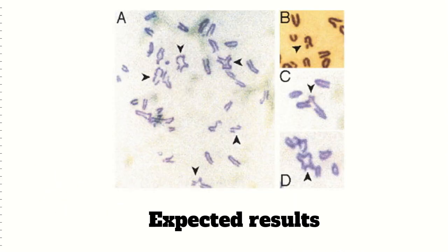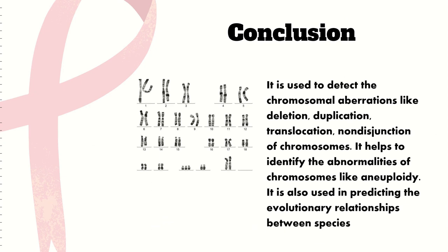The expected results are as follows. In conclusion, transgenic mice for conditionally knocked-out BRCA1 gene were generated using the Cre-lox P system. The BRCA1 mutation was analyzed using chromosomal karyotyping, which is used to detect chromosomal aberrations like deletion, duplication, translocation, and non-disjunction of chromosomes. It helps identify abnormalities such as aneuploidy and is also used in predicting evolutionary relationships between species.